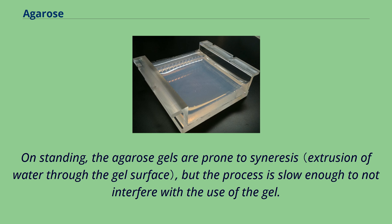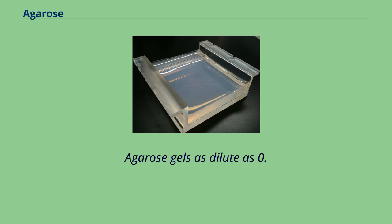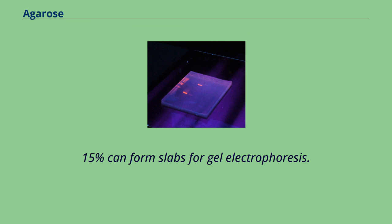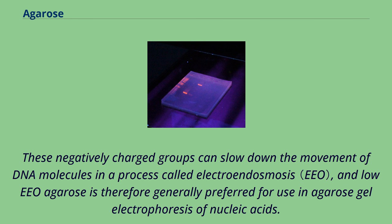On standing, the agarose gels are prone to syneresis, but the process is slow enough to not interfere with the use of the gel. Agarose gel can have high gel strength at low concentration, making it suitable as an anti-convection medium for gel electrophoresis. Agarose gels as dilute as 0.15% can form slabs for gel electrophoresis. The agarose polymer contains charged groups, in particular pyruvate and sulfate. These negatively charged groups can slow down the movement of DNA molecules in a process called electroendosmosis, and low EEO agarose is therefore generally preferred for use in agarose gel electrophoresis of nucleic acids.